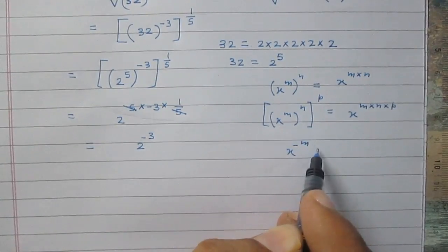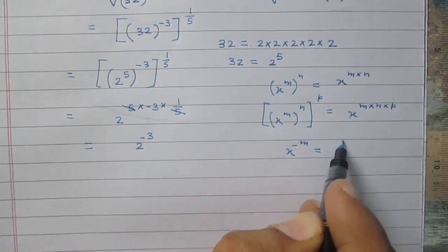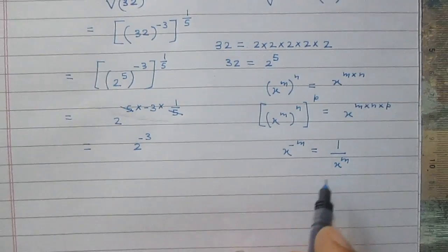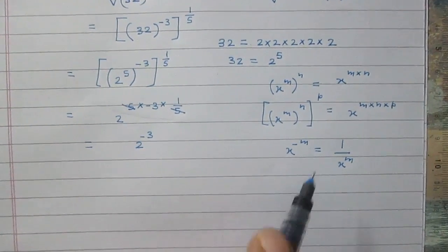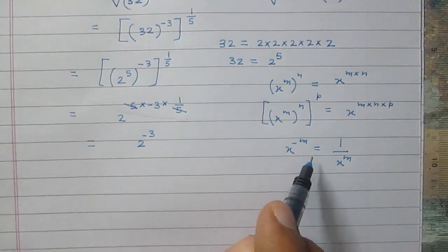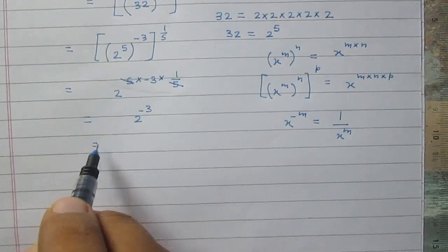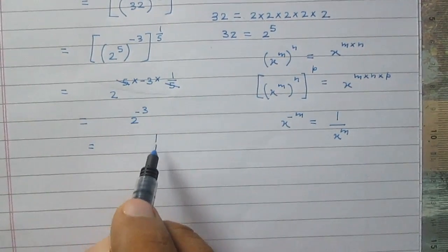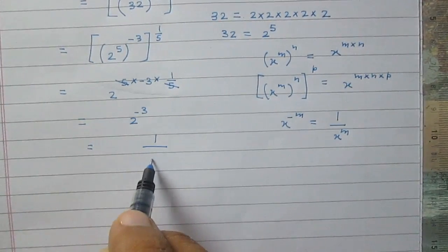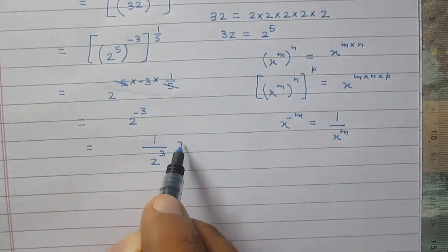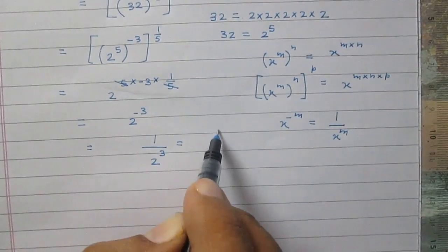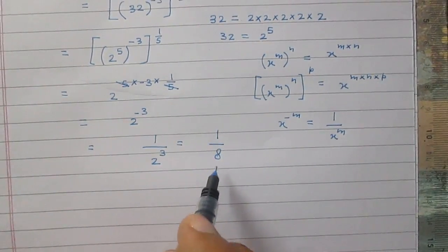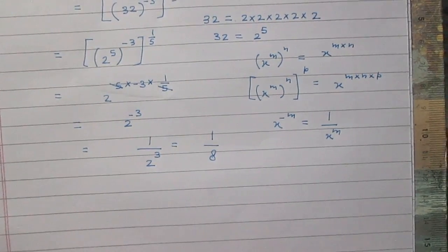We know that x raised to the power minus m is equal to 1 upon x raised to the power m. Using this rule, we can write 2 raised to the power minus 3 as 1 divided by 2 raised to the power 3. And 2 raised to the power 3 is 8, so the answer is 1 upon 8.